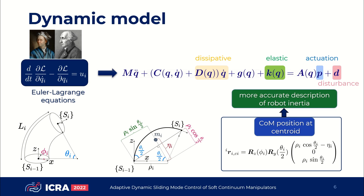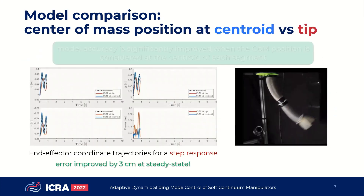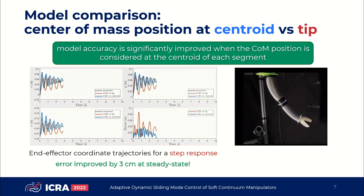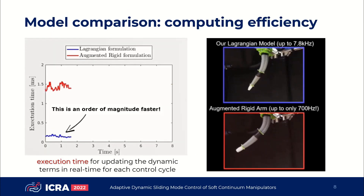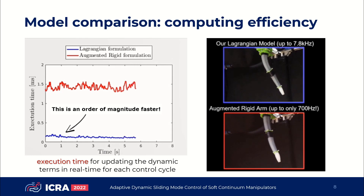For our model, we assume that every segment has a mass point at the geometric centroid. This is unlike some simplified models that lump a mass at the tip of each segment. As you can see from the plots showing the effector trajectories and the tracking errors, our model response is pretty close to the experimental results, as opposed to simplified models with a mass at the tip. Besides being more accurate, our model is also highly efficient — we can update the dynamic terms much faster than a recent state-of-the-art model.